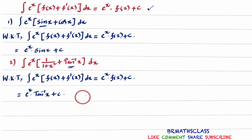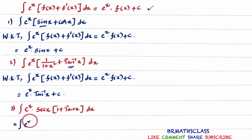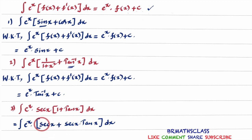Now we'll do one more problem: the integral of eˣ into secx times (1 plus tanx) dx. I will do a little simplification by multiplying secx into (1 plus tanx): that equals the integral of eˣ into secx plus secx·tanx dx. In the differentiation chapter, we learn that the derivative of secx is secx·tanx.